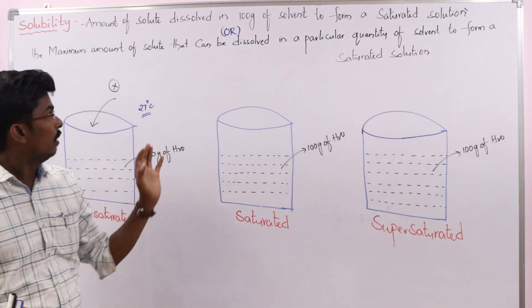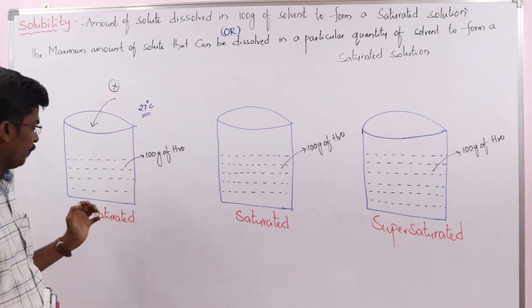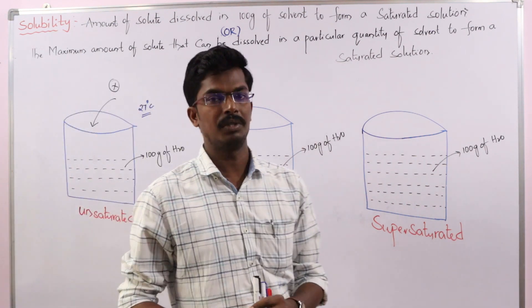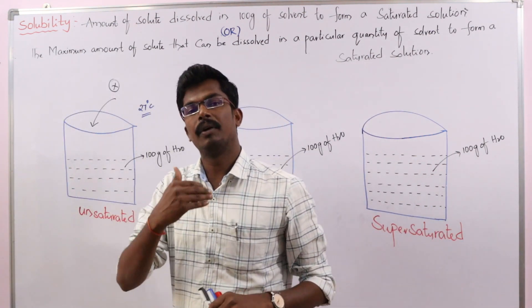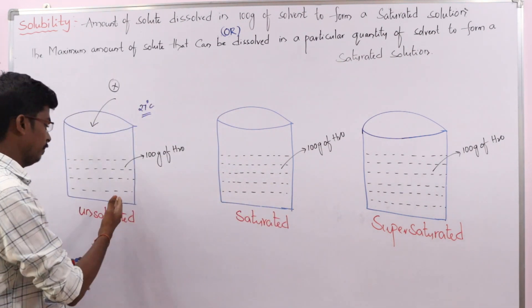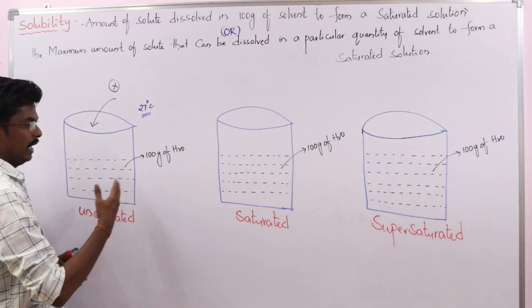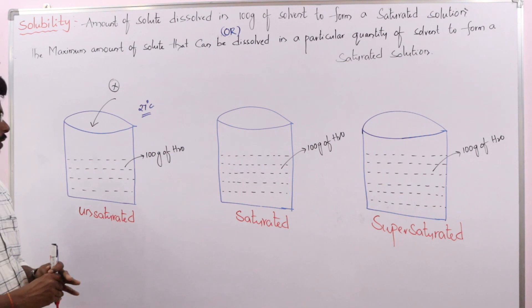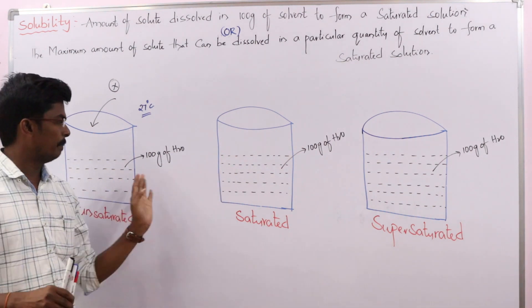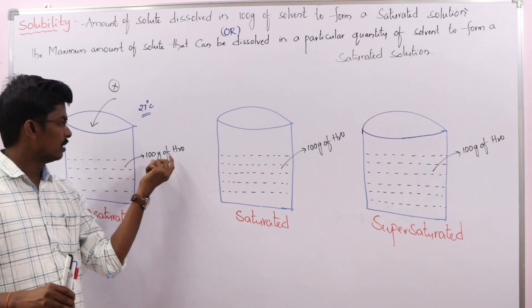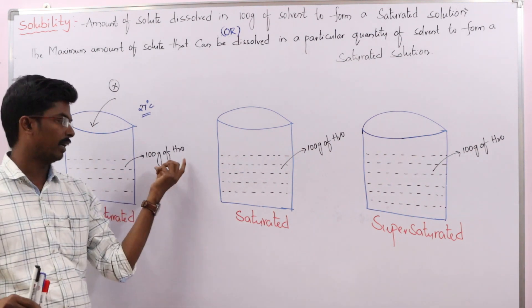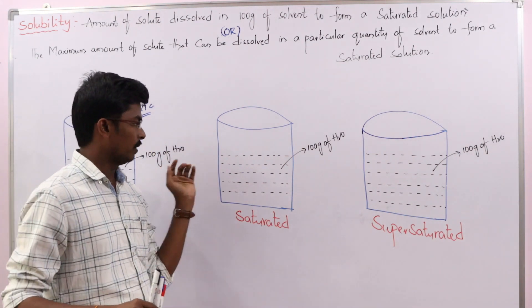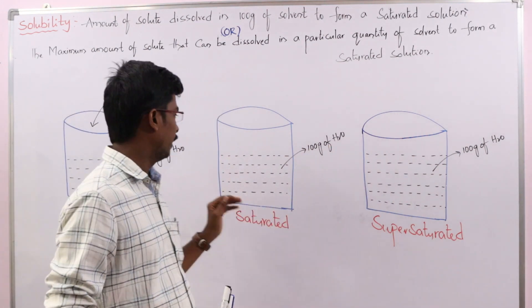So here, to make it easy to understand, based on solubility we are classifying which is unsaturated, which is saturated, and which is supersaturated solution. To understand easily, I am taking three beakers, and in each beaker I am taking a particular amount of solvent — for example, 100 grams of H₂O.